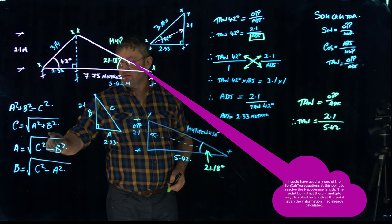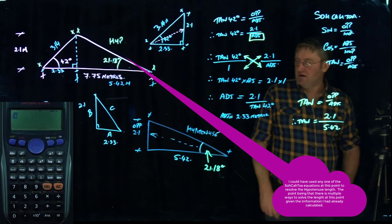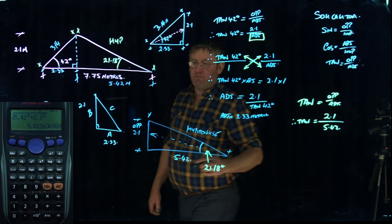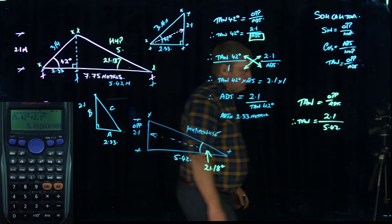So on the calculator, square root symbol for a start. We've got 5.42 squared plus 2.1 squared equals. And that gives us 5.81. So the hypotenuse length along here, 5.81 meters.